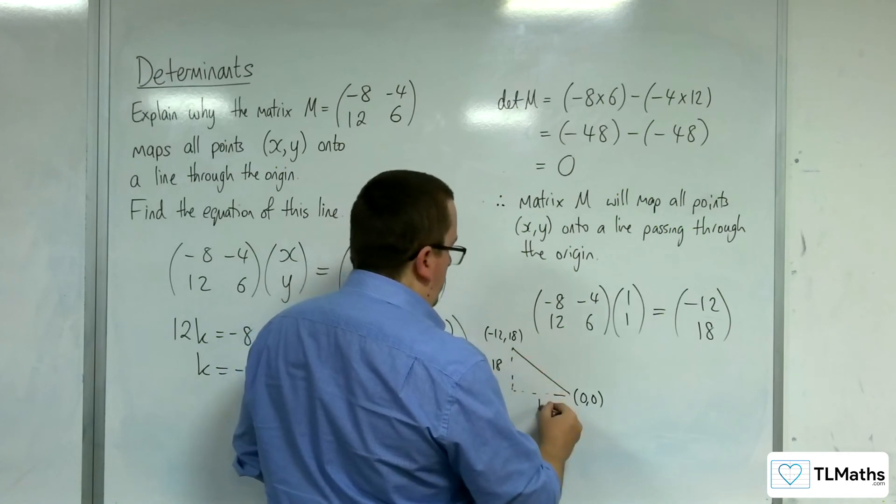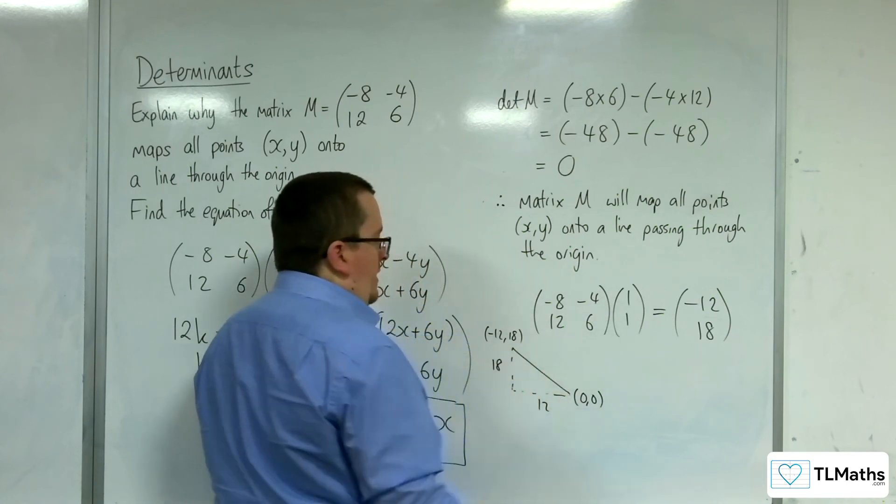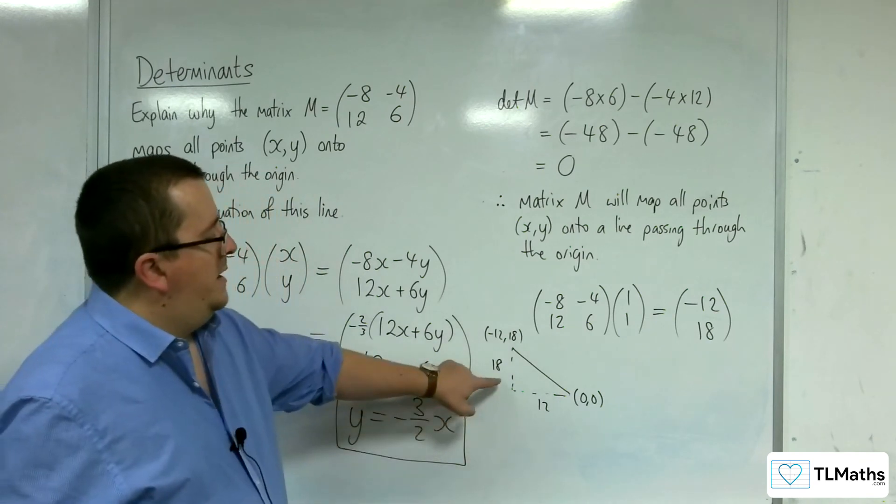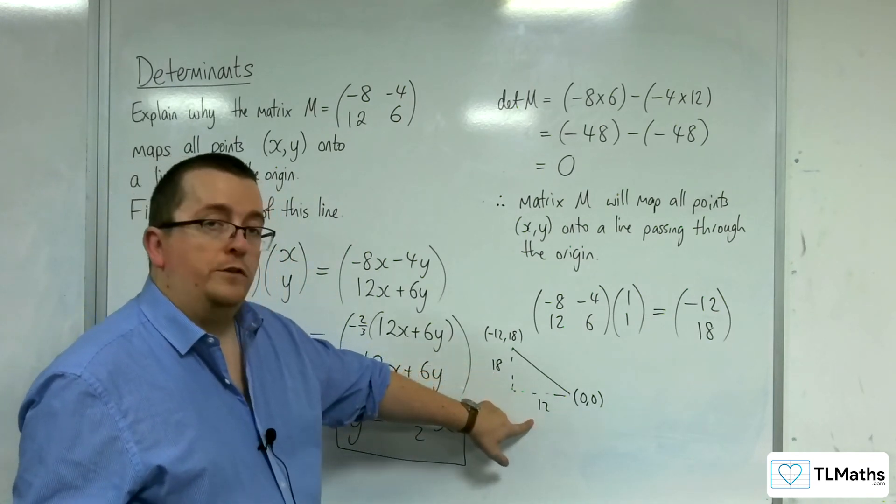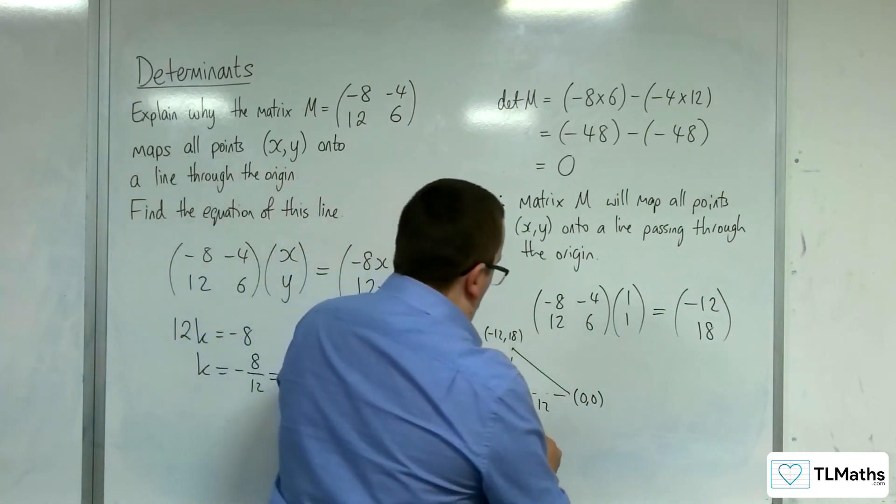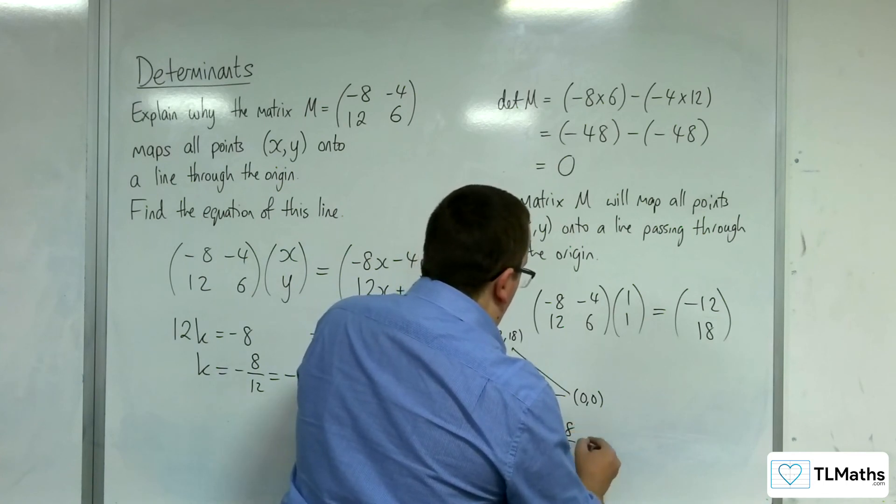So, 18, 12. So, the gradient of that line will be negative 18 over 12. So, y is equal to negative 18 over 12x.